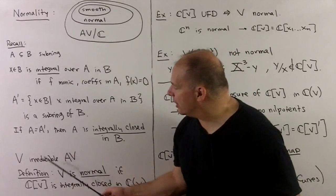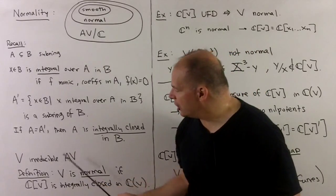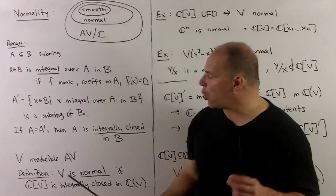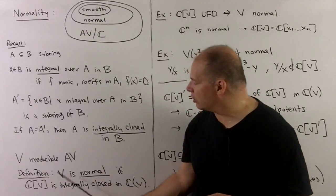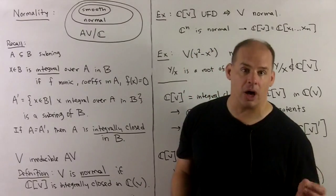If V is an irreducible affine variety, we'll say that V is normal if the coordinate ring of V is integrally closed in the field of rational functions on V.